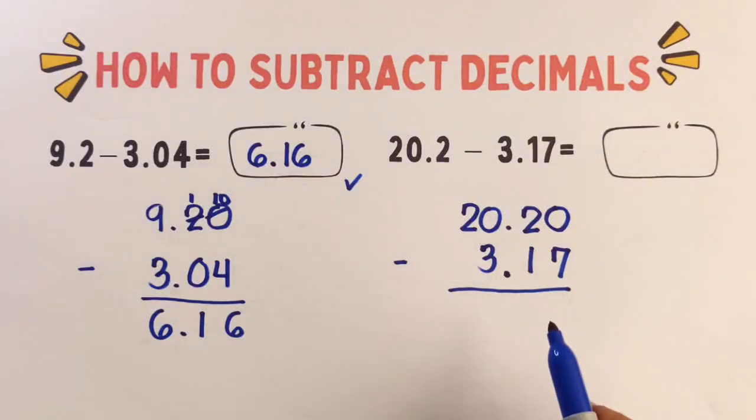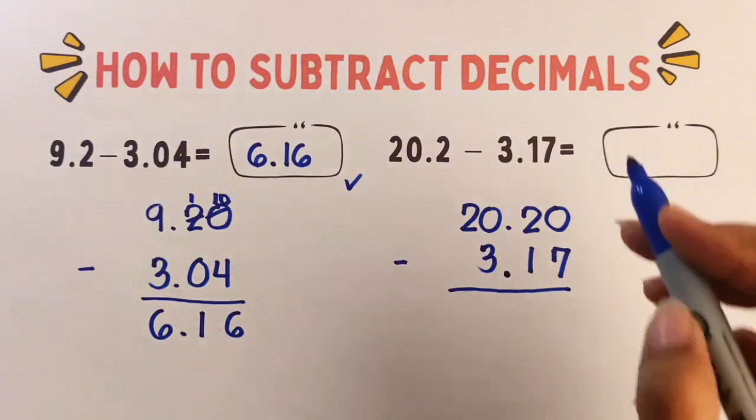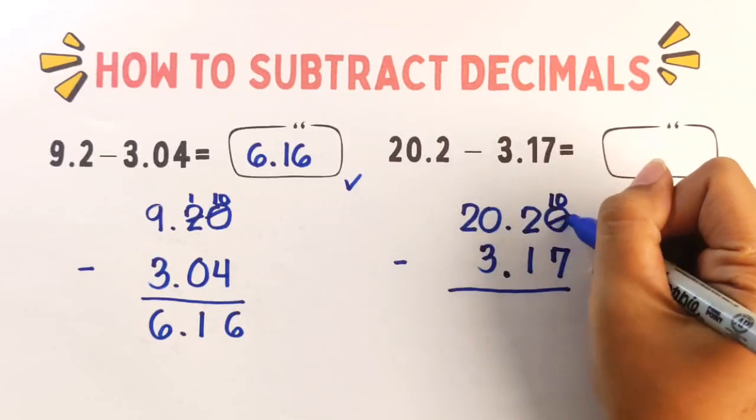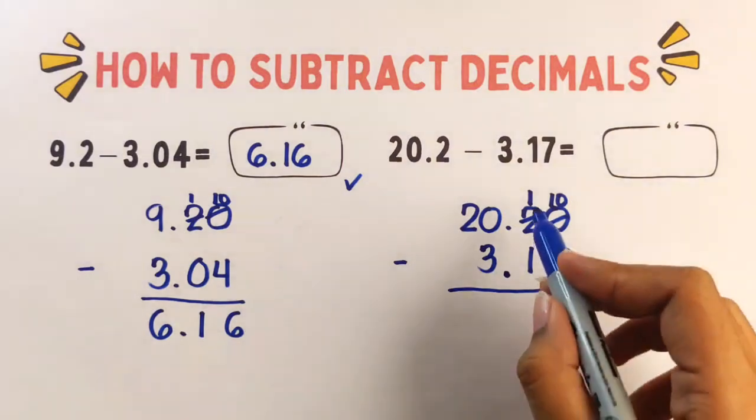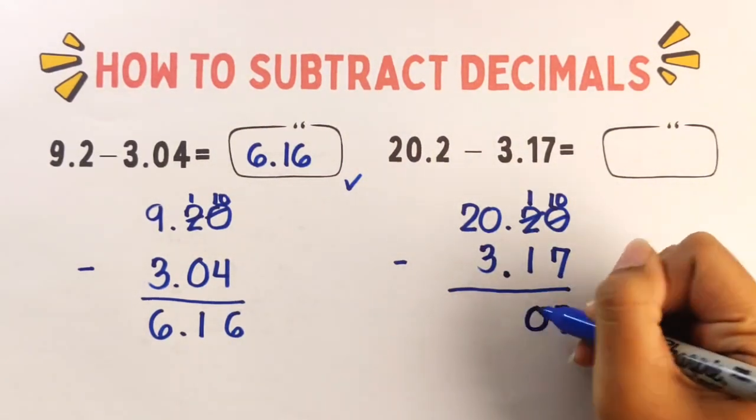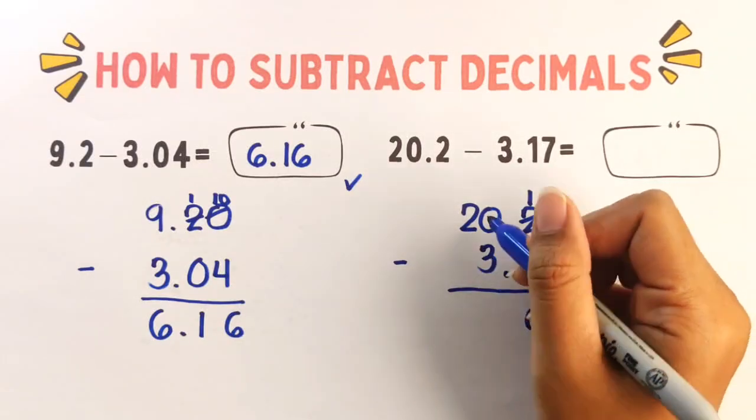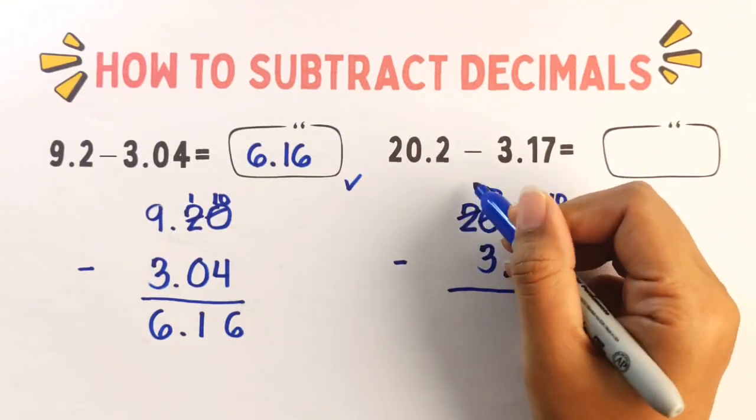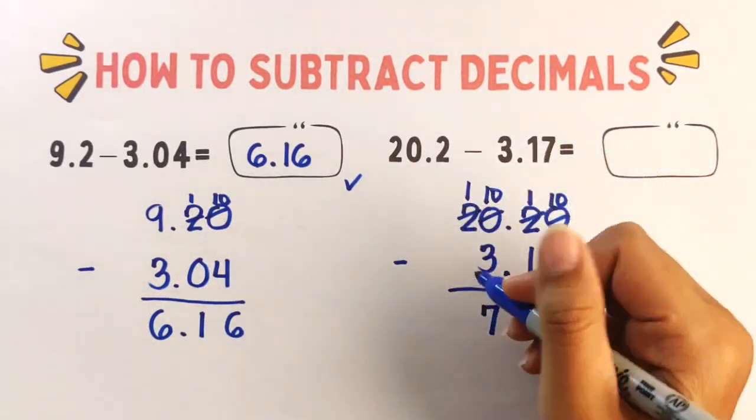Step number two, subtract from right to left. Hundreds and tens. So we have 0 minus 7, we need to borrow here. So it will be 10 and this one will be 1. So 10 minus 7 is equal to 3. And 1 minus 1 is equal to 0. Then 0 minus 3 cannot be. So we need to borrow here. So it will be 10 and then it will be 1. So 10 minus 3, the answer is 7. And bring down 1.